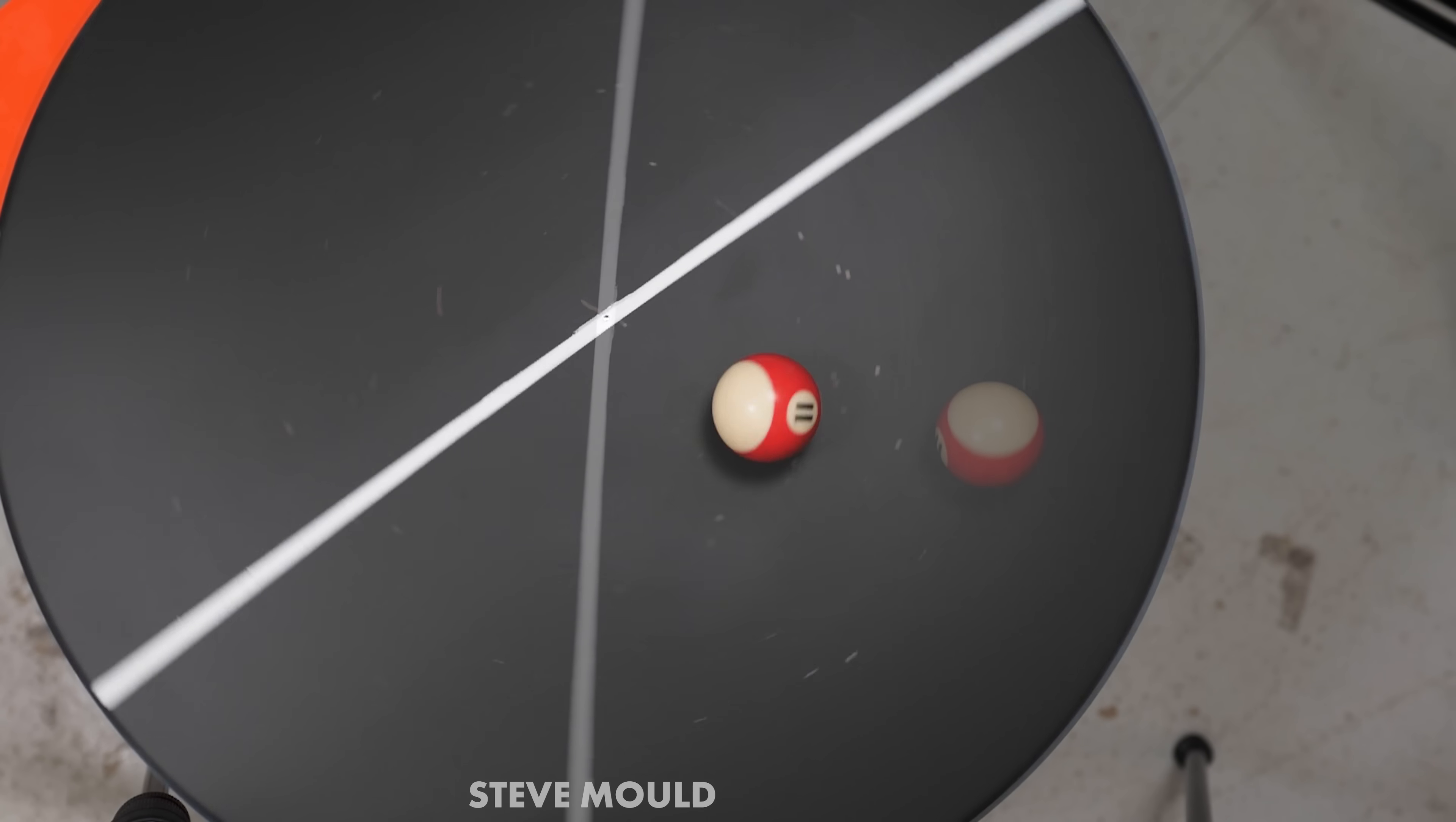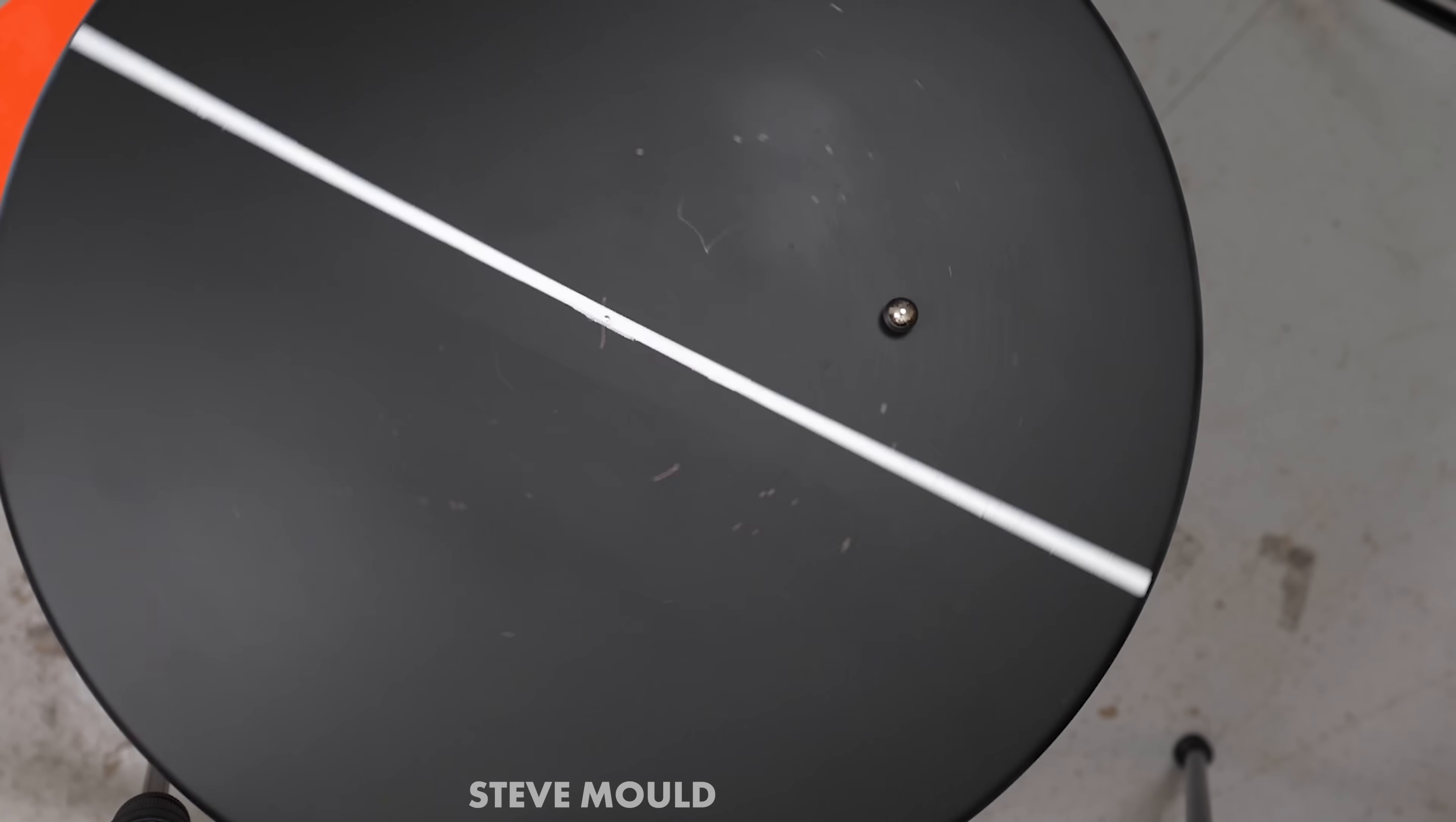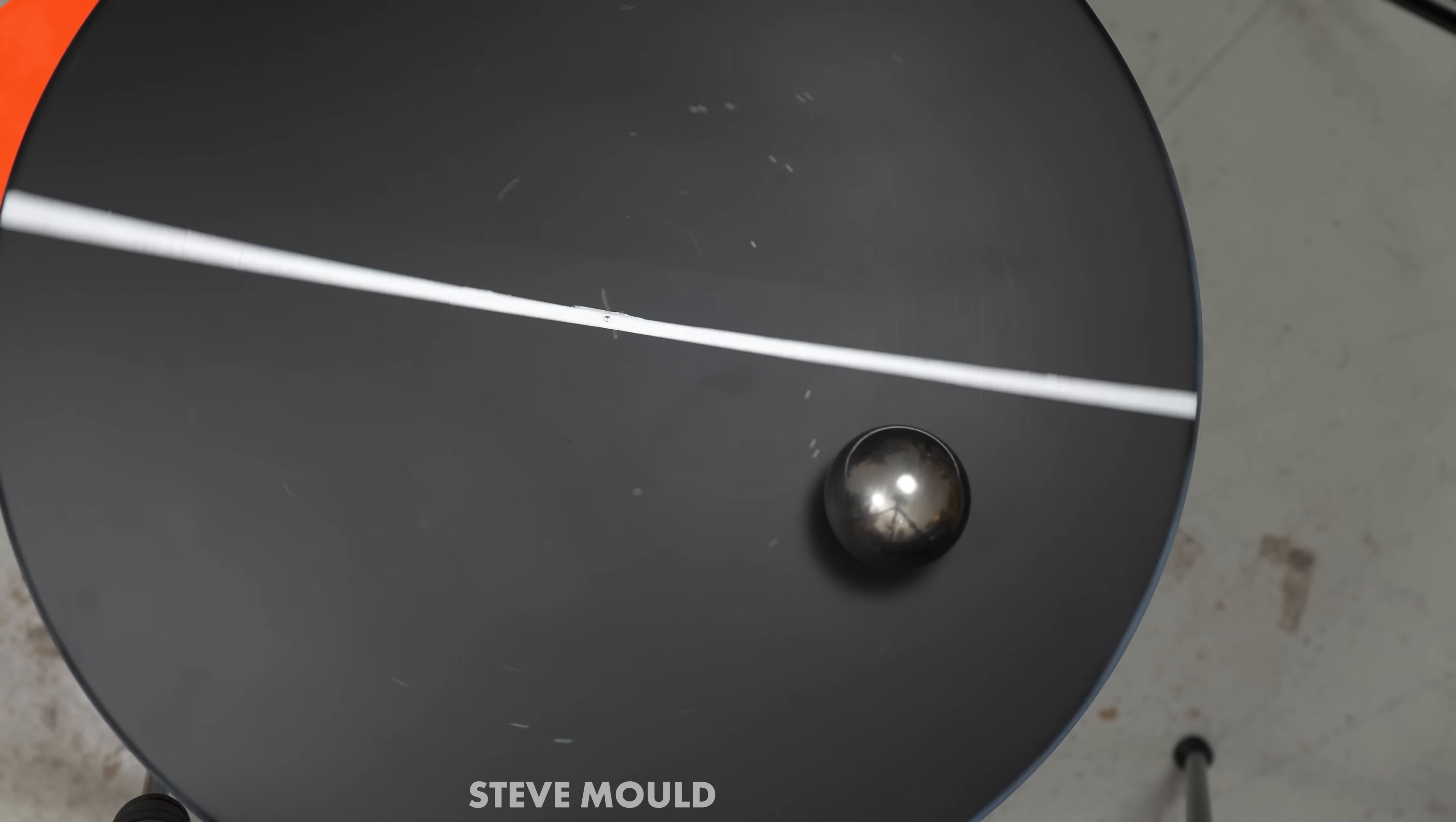And look, in the time it took for the turntable to rotate seven times, the ball completed two orbits. And that's always the way. It doesn't matter how heavy the ball is. It doesn't matter how big the ball is. It doesn't even matter how fast the turntable is turning. There will always be this seven to two ratio.